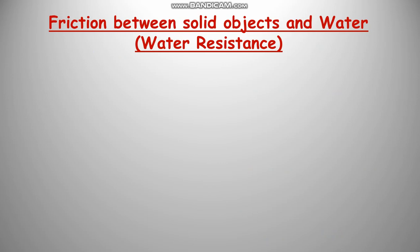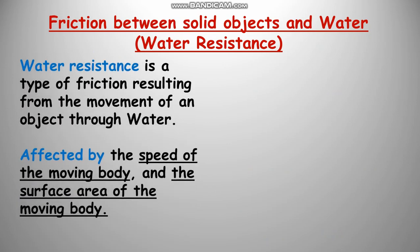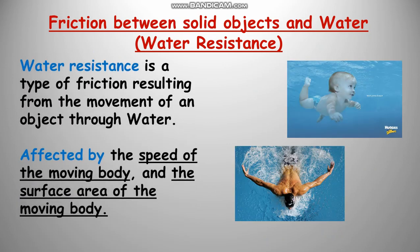Now, the friction force between solid objects and water is called water resistance. Water resistance is the type of friction resulting from the movement of an object through water, and it is affected by two factors, just like air resistance: the speed of the moving body and the surface area of the moving body.